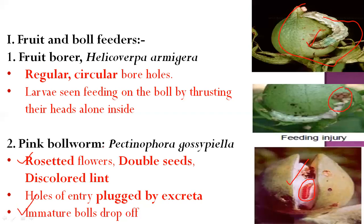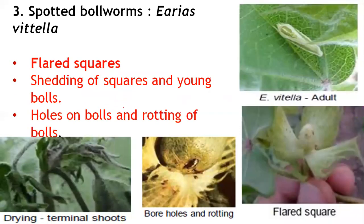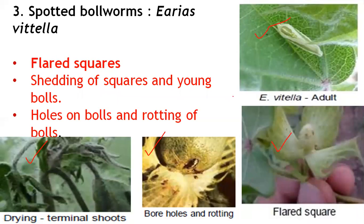The third bollworm is the spotted bollworm. The adult is Earias vitella (also another species Earias insulana). Symptoms caused include flat square bores or holes and rotting. Symptoms include shedding of squares and immature bolls, holes on bolls, and if attack continues, rotting of bolls occurs.